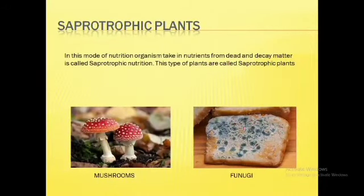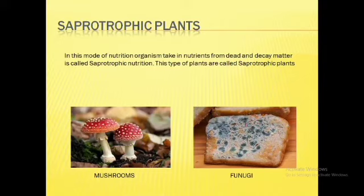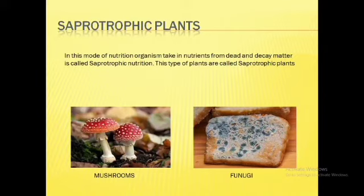Now let us talk about saprotrophic plants. In saprotrophic nutrition, organisms like fungi and bacteria obtain their food from dead and decaying substances. They break down the dead organic matter to get their nutrition. This type of nutrition is called saprotrophic nutrition, and the plants or organisms that follow it are called saprotrophic plants or decomposers.